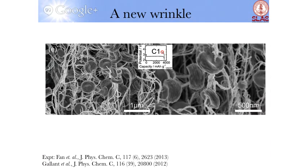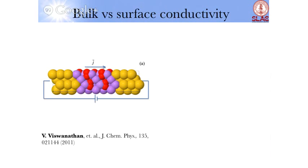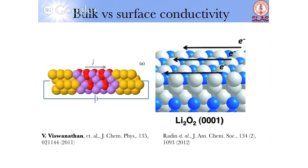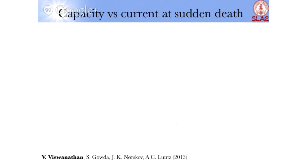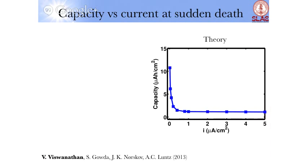This prompted us to look for other active transport modes. It turns out we had only probed the bulk. The surfaces of lithium peroxide are also conductive. So one must consider surface conductivity when determining the transport limit of lithium peroxide. Importantly, surface conductivity scales linearly with distance — the longer the electron has to travel along the surface, the more difficult it is — a standard diffusive process.